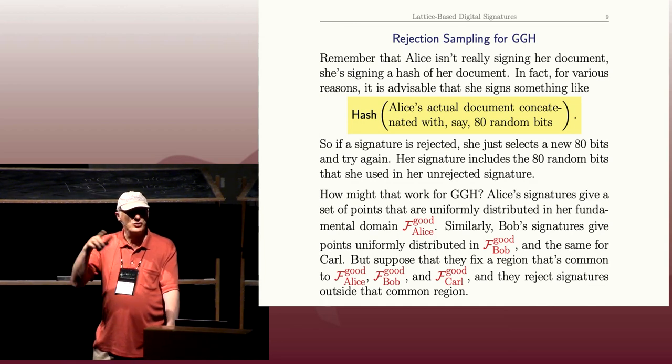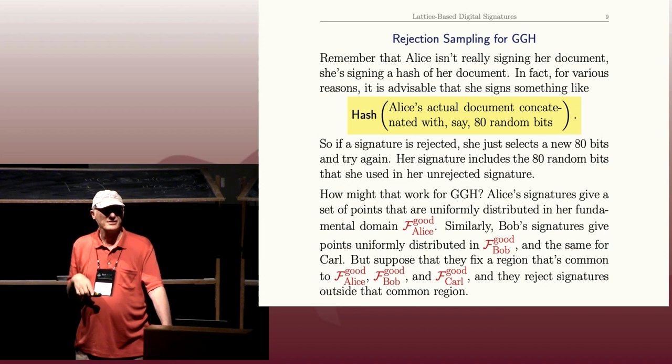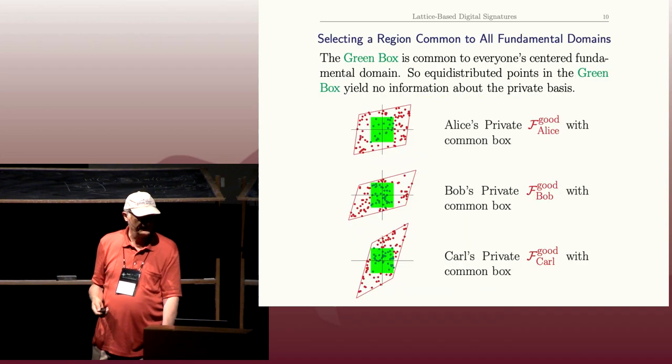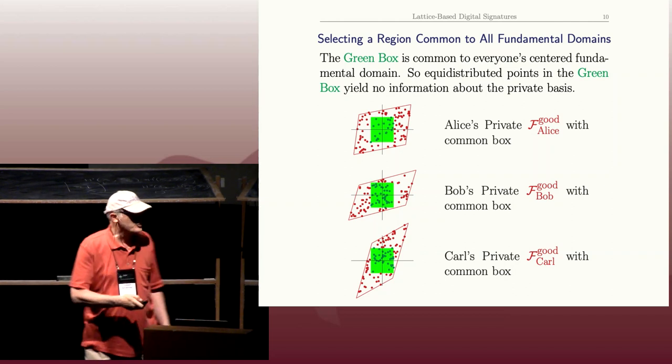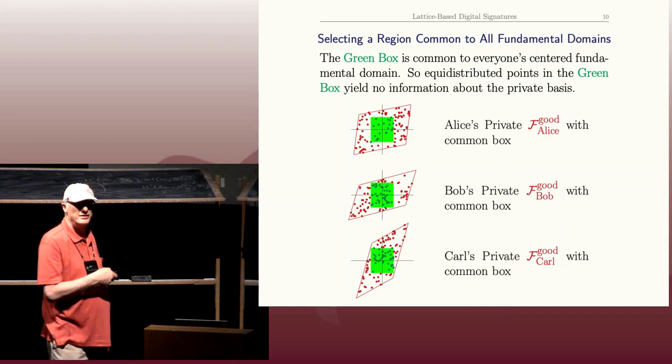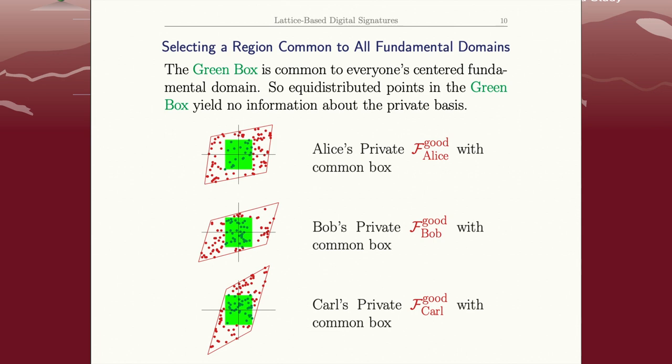Well, how about if we choose a region that's common to all the parallelograms and only release the signatures in those? So Alice generates Alice's signatures—the ones she generates are all the dots in this picture—but the only ones she uses are the ones that are in the box, the square box in the middle. Bob generates all the dot signatures here but only releases the box ones, same with Carl. Then all three of them, if you had a long list of signatures, what it would look like is just a set of dots that's uniformly distributed in this box, in the square there. They're identical, so they can't give any information to Eve because the distributions look identical.